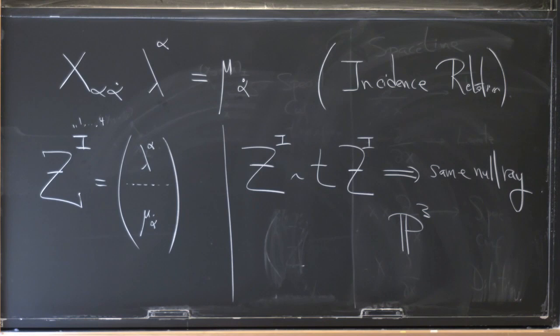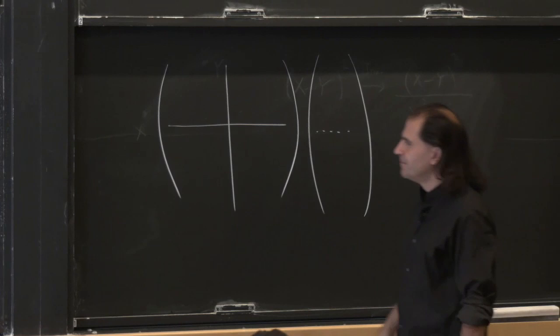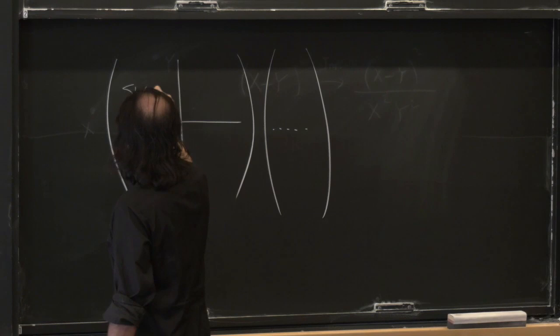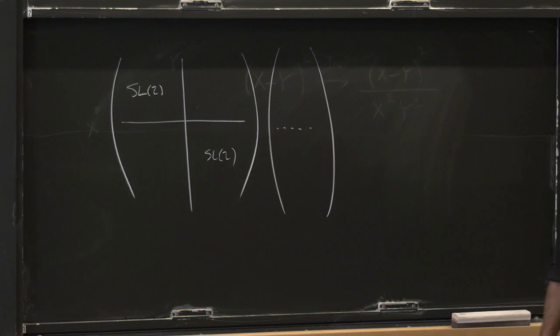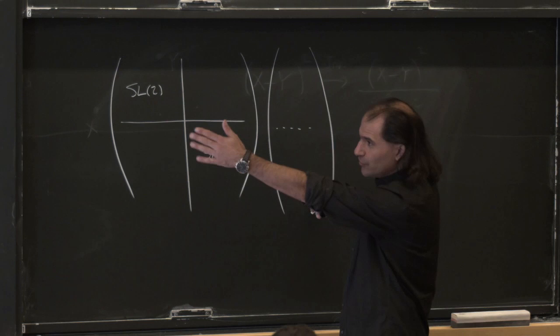So this is a nice way of talking about null rays. Let's see how conformal transformations act on these variables. If I take this four-vector z, let's see how some obvious symmetries act on it. I can take an SL2 up here and an SL2 down there, and those two are the Lorentz transformations. They just act on lambda and they act on mu — so they act on the two kinds of indices.